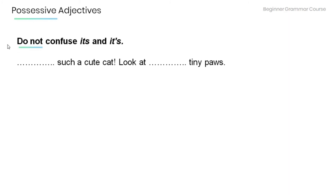Also remember not to confuse 'its' and 'it's' with an apostrophe. Read the following sentences and fill in the gaps: 'It's such a cute cat. Look at its tiny paws.' Answer: 'It's' is the contraction of 'it is,' and 'its' is the possessive adjective modifying 'paws.'